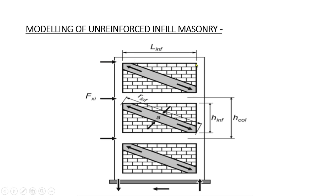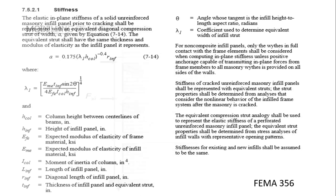This shows how we model the infill panel as an equivalent diagonal member or equivalent diagonal compression strut. This is our infill panel, and the equivalent diagonal represents the whole panel of the masonry wall. There are different code parameters — such as the width of this strut — and different codes give guidelines on how to find these parameters. IS 1893:2016 has guidelines, and this screenshot is from FEMA 356, which is a very well-known code.